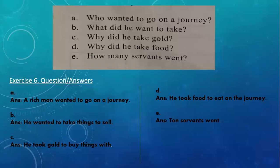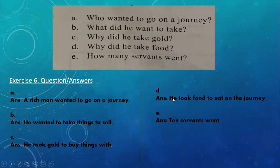Here are the question answers: A) Who wanted to go on a journey? — A rich man wanted to go on a journey. B) What did he want to take? — He wanted to take things to sell. C) Why did he take gold? — He took gold to buy things with. D) Why did he take food? — He took food to eat on the journey. E) How many servants went? — 10 servants went. It's a simple chapter about fewer, more, and less, and the story of the clever servant.